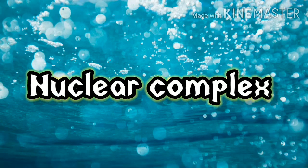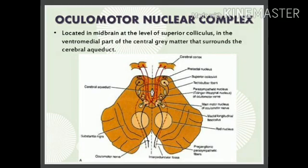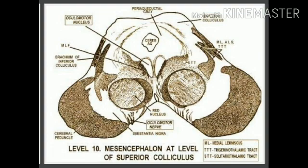The nucleus of the third cranial nerve is located in the midbrain at the level of the superior colliculus, in the ventromedial part of the central gray matter that surrounds the cerebral aqueduct. The fibers for the constrictor pupillae and for the ciliaris arise from the Edinger-Westphal nucleus, which forms part of the oculomotor nuclear complex.